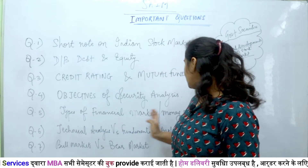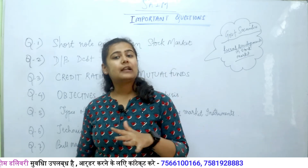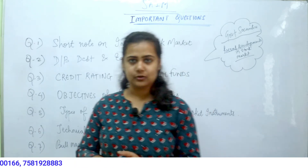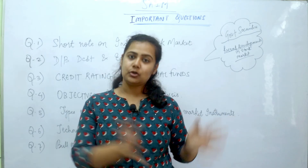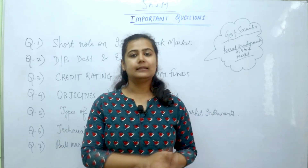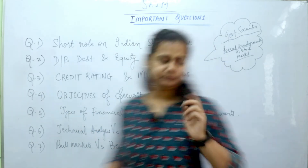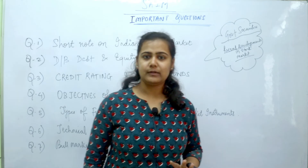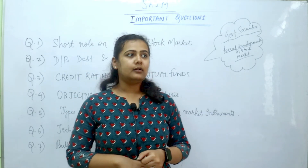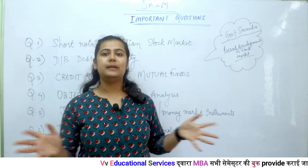Next is the types of financial markets. Financial markets are of two types: money market and capital markets. Capital market deals with long-term securities with maturity of more than a year, like shares and debentures. Money market is where you deal with short-term securities with maturity of less than a year. There may be two questions from the same topic — types of financial markets, and money market instruments such as treasury bills, commercial paper, commercial bill, and call money.